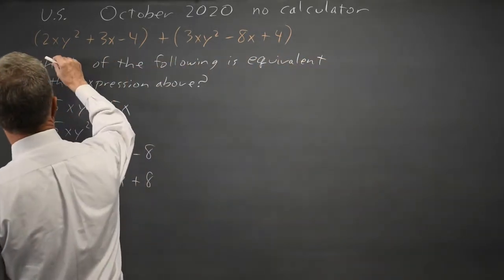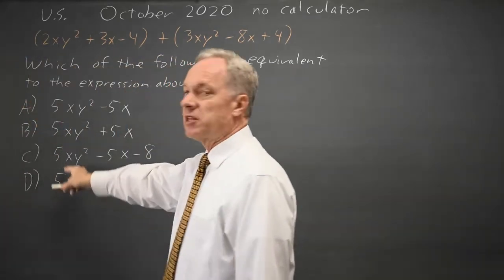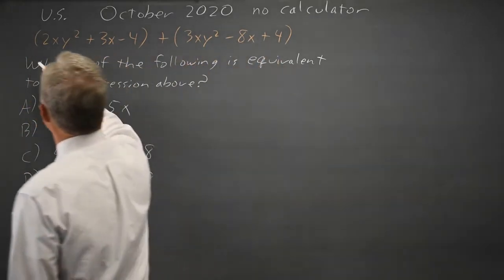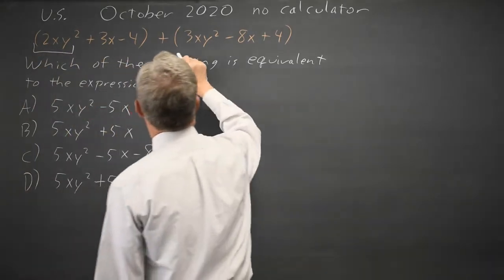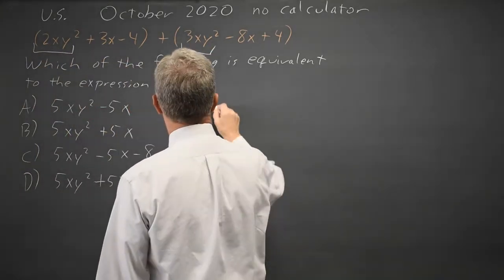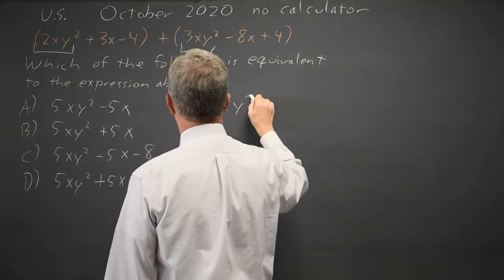So I find my xy² terms, and all the answer choices tell us that's 5xy². There's 2xy² there plus 3xy², so that is 5xy².